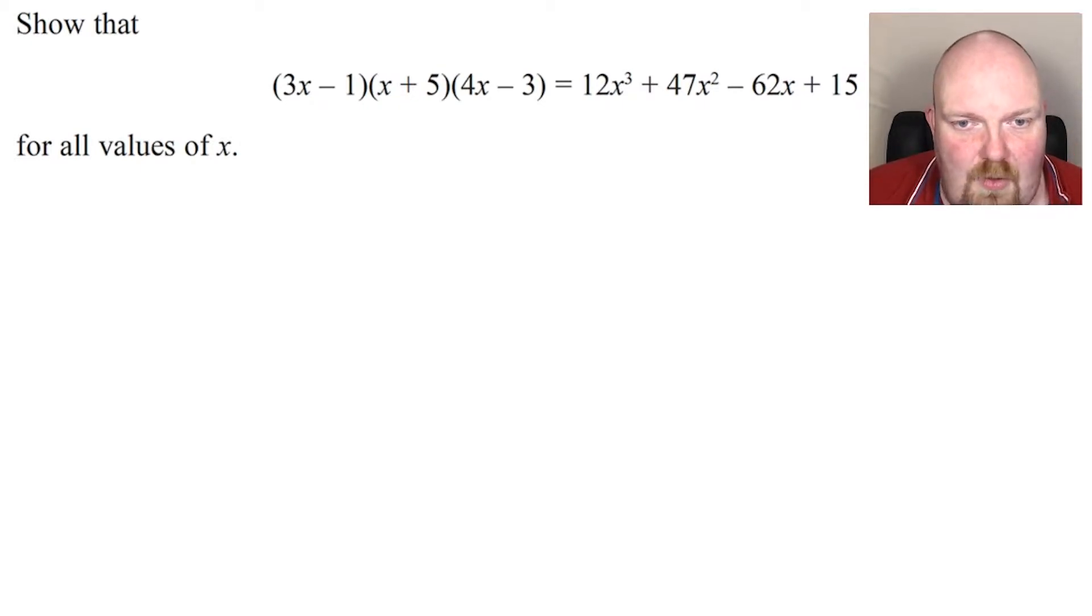So what I'm going to do is start off by multiplying out the first two brackets. I can use either the foil method or the smiley face method, whichever version you're used to. Here I've got 3x times x is 3x squared. Here I've got minus 1 times 5, so that's minus 5. Here I've got minus 1 times x, so that's minus x. And here I've got 3x times 5 which is 15x.